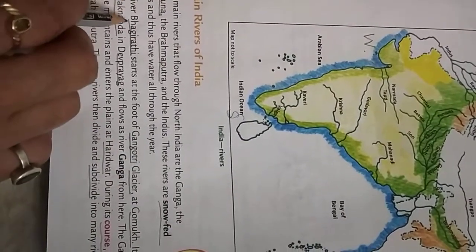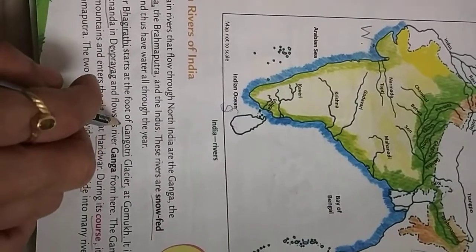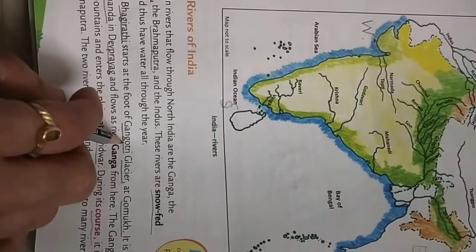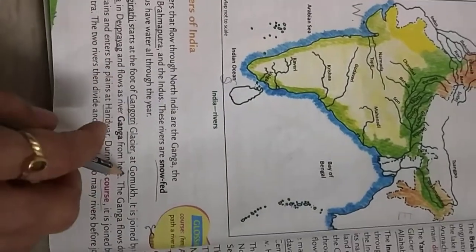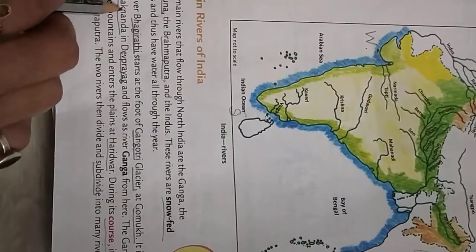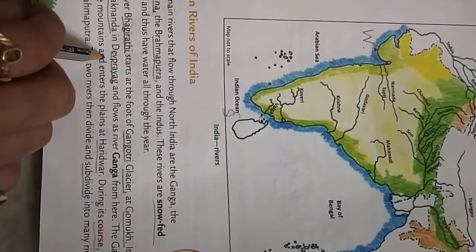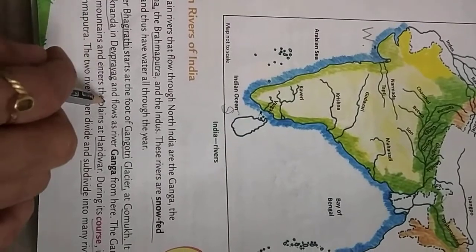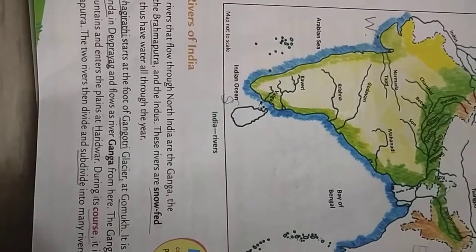So, how does the Ganga river originate? First, river Bhagirathi starts at the foot of Gangotri Glacier at Gomuk. Then it is joined by Alaknanda in Dev Prayag, and from Dev Prayag it flows as river Ganga.